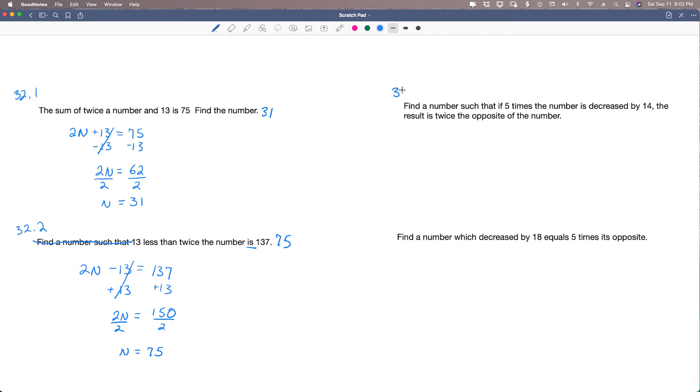32.3. Let's try this one. Find a number such that, cross it out. 5 times the number, that's 5 times the number, is decreased by 14. The result is, this right here. The result is, that's equal sign.